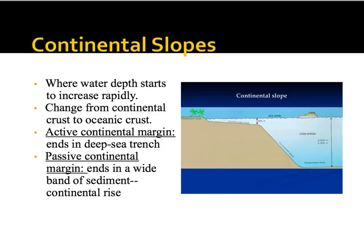Immediately after the continental shelf comes the continental slope, where water depth rapidly starts to increase — just like a negative slope. This is where it changes from continental crust to oceanic crust. At an active continental margin, this slope will end in a trench. At a passive margin, it ends in what's called a continental rise, which is a deposition of sediments.